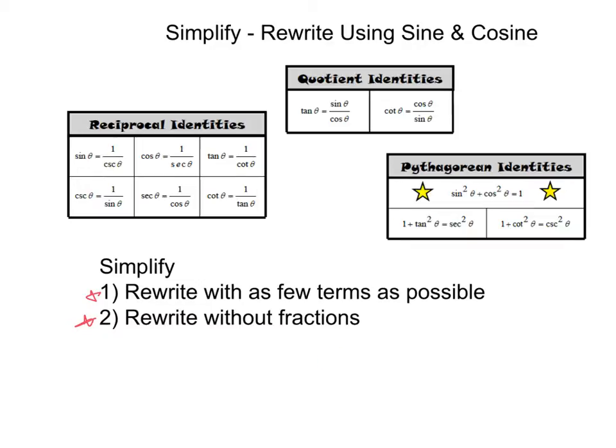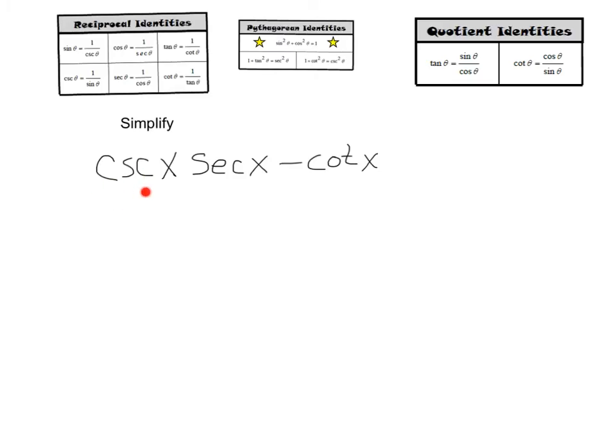The first method we're going to use to do this is rewrite expressions using only sine and cosine functions. Here we've got the expression cosecant x times secant x minus cotangent x. Let's try to simplify by rewriting using only sine and cosine.